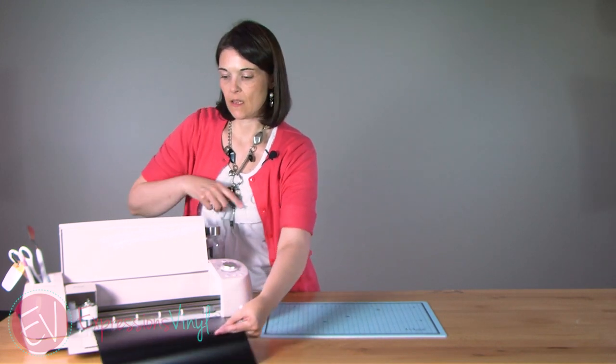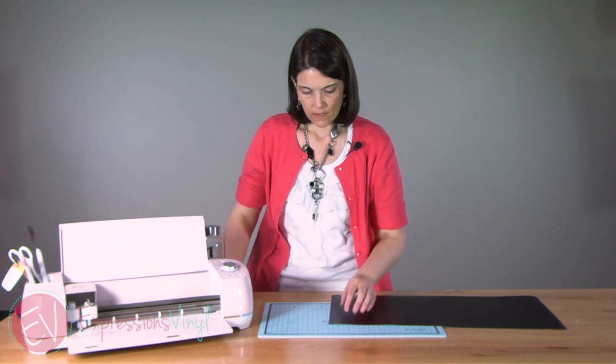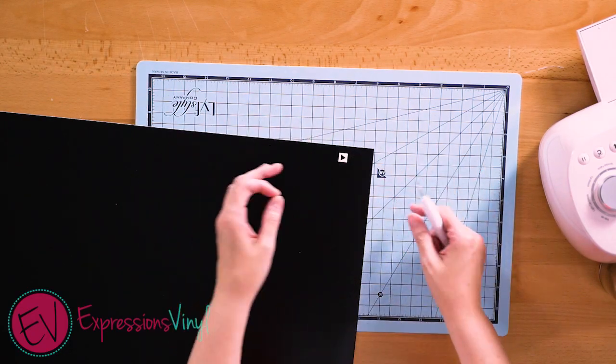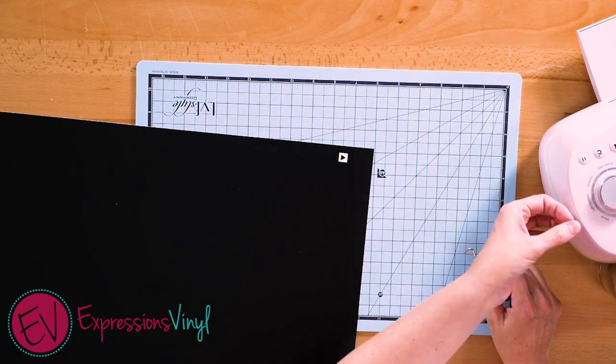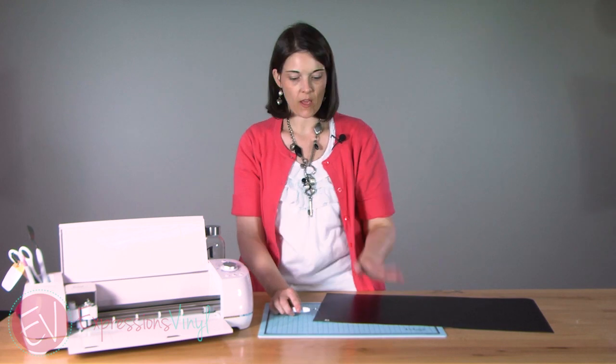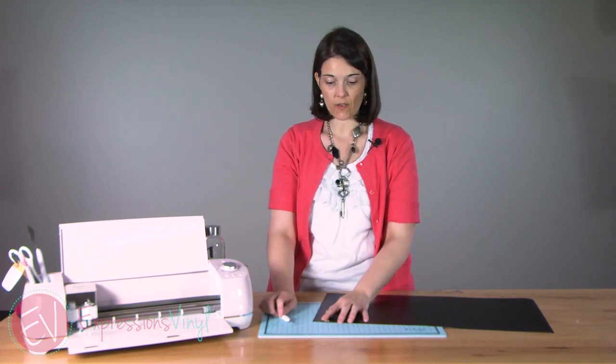Once it's cut, unload it, bring it out, and just weed it out. Weeded out perfectly, it cut perfectly. The triangle stayed in there, the square came out. So the setting I've got it on will work great for this vinyl.